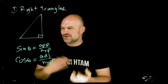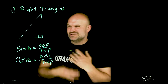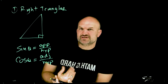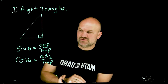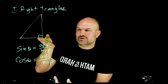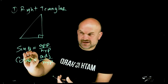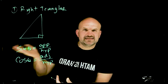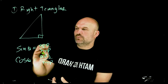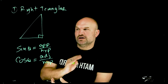A lot of times with SOHCAHTOA we include tangent just to help remember it. But I think something more important is that sine and cosine are a comparison — we have a ratio. And sine and cosine have an argument of an angle. They're not like the Pythagorean theorem; we are referring to the sides with respect to where the angle is, and where the angle is makes all the difference.